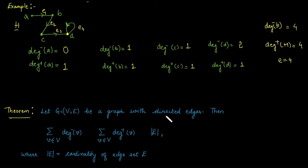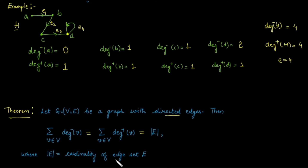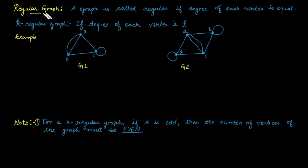An important result: if G is a graph with directed edges, then the sum of the in-degrees of the vertices equals the sum of the out-degrees of the vertices, which is further equal to the number of edges — that is, the cardinality of the edge set E.